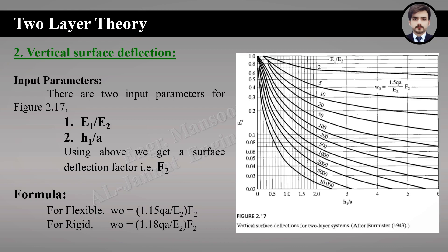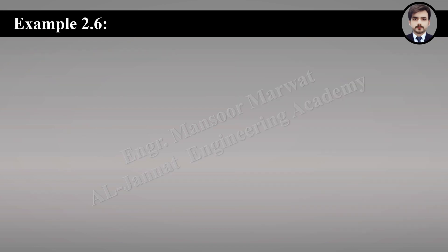Vertical surface deflection is also used as a criterion for pavement design. It is expressed in terms of a deflection factor F2, with reference figure 2.17, having two input parameters: modulus ratio E1/E2 and thickness-to-radius ratio. The formula differs for flexible and rigid plates: for flexible it is 1.15·qa/E2 × F2, and for rigid it is 1.18·qa/E2 × F2. Note that Figure 2.17 uses thickness-to-radius ratio (h1/a), whereas Figure 2.15 uses radius-to-thickness ratio — don't get confused.